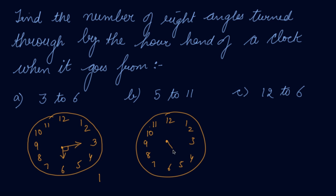From 5, the hand has gone to 11. It has made one right angle and then another right angle, completing 180 degrees. So it has made two right angles.